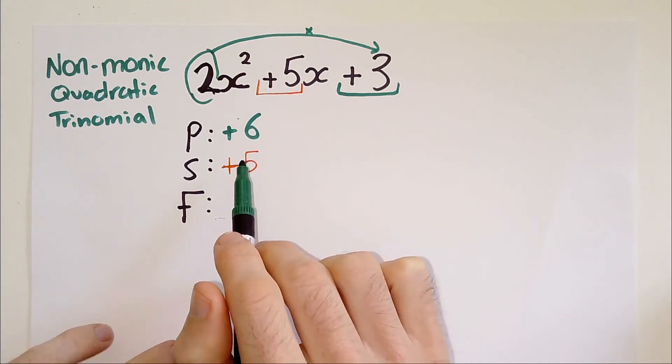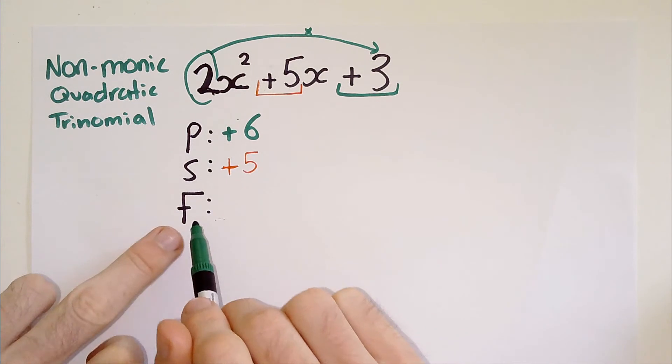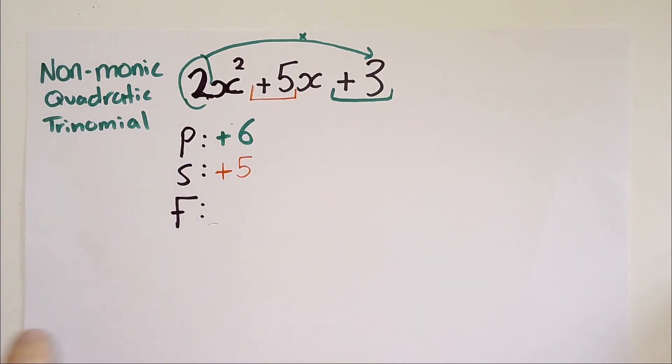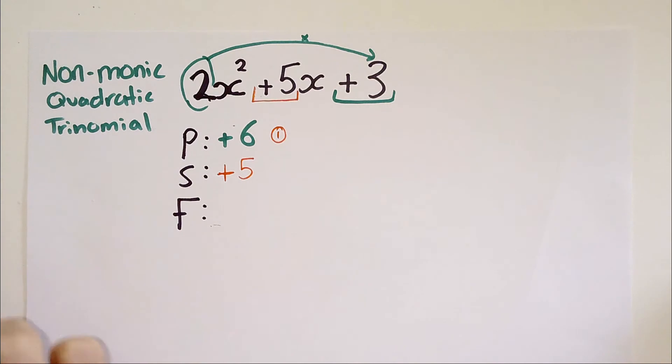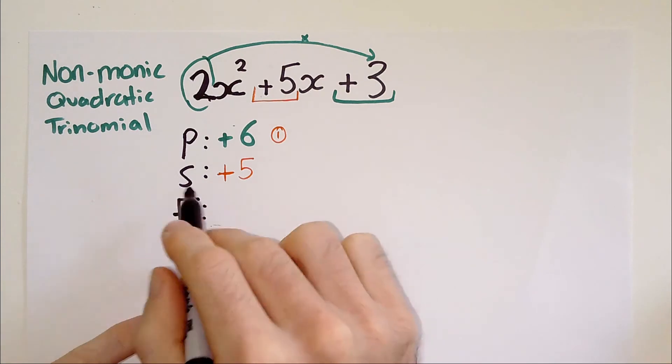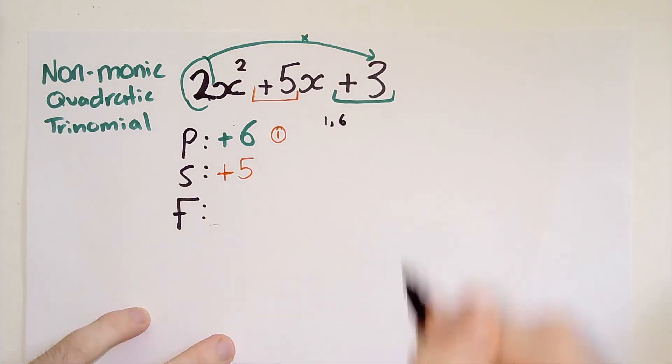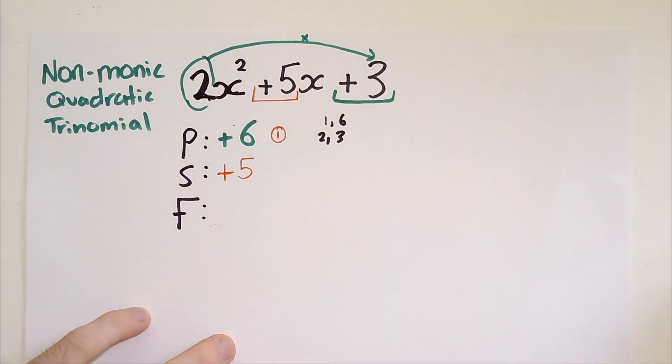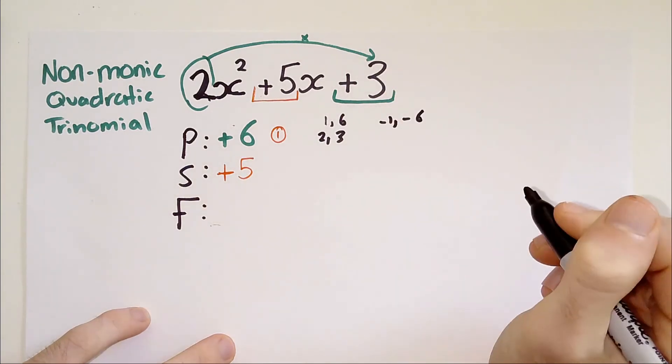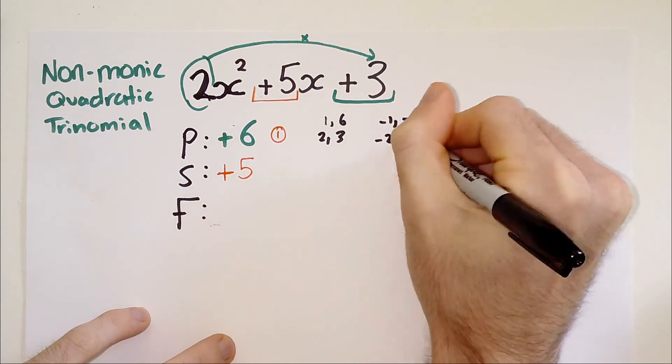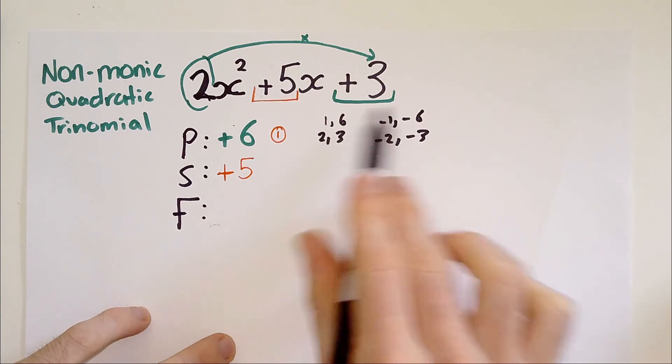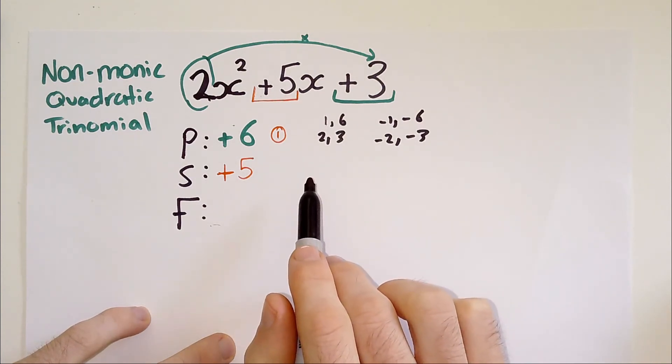What we now do is we actually find two factors that multiply to plus six. So what two numbers multiply to six? There's a couple of combinations. We have one and six, we have two and three, and then of course you have negative one and negative six. Don't forget to consider negatives, and negative two and negative three, because negative two times negative three equals positive six. A negative and a negative makes a positive.